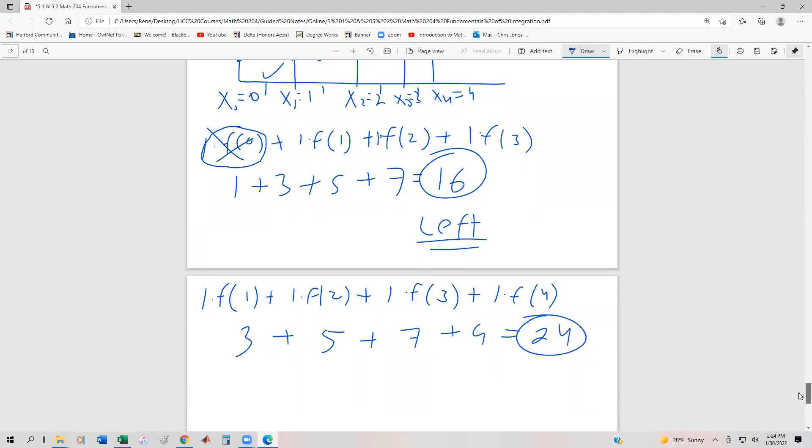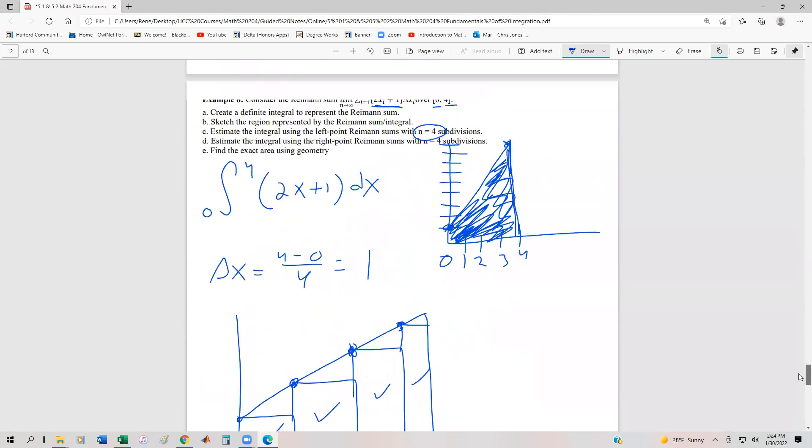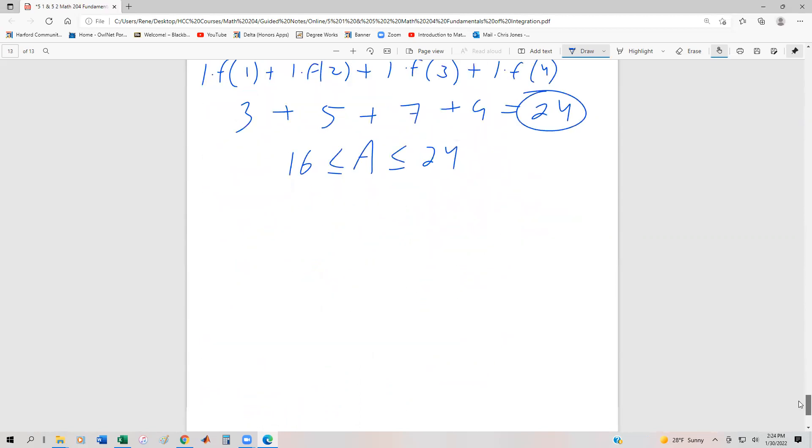Remembering back to the other videos, we know that the true area is going to be somewhere between 16 and 24. If we were to graph it, we could see that the right-hand gives us an overestimate. Now we're going to use geometry to find the exact area, and we have to be careful because we don't necessarily have a true triangle.